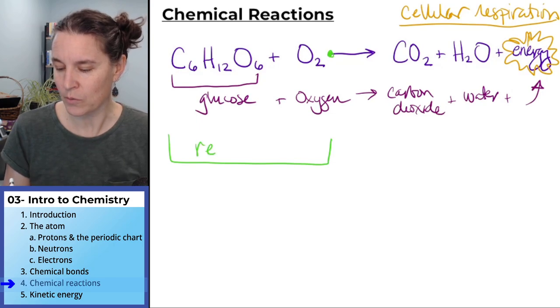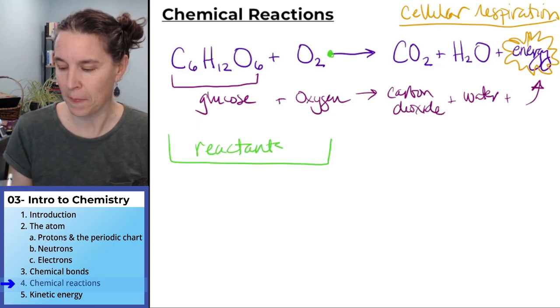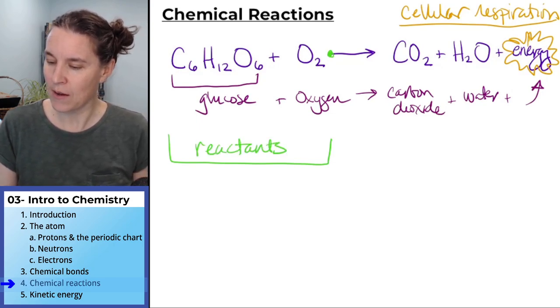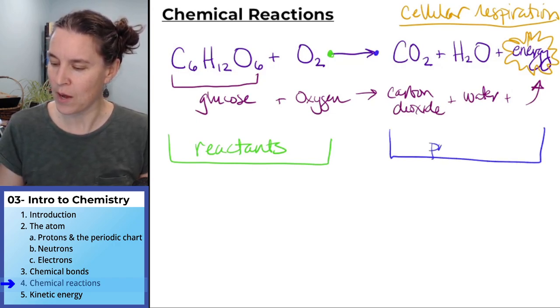These are called reactants. And on the front side of the arrow, the things that result are the products.